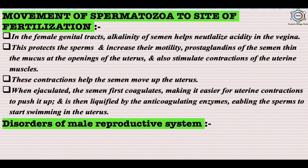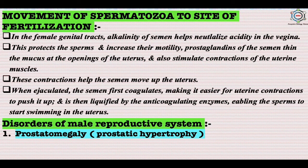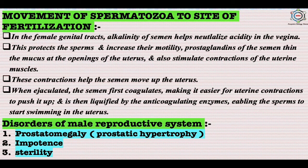Disorders of the male reproductive system include: prostatomegaly or prostatic hypertrophy, which is the enlargement of the prostate gland; impotence, which is the inability of the male to achieve and maintain an erection of the penis long enough to engage in complete copulation; and sterility, which is the inability of the male sperm to fertilize the ovum.